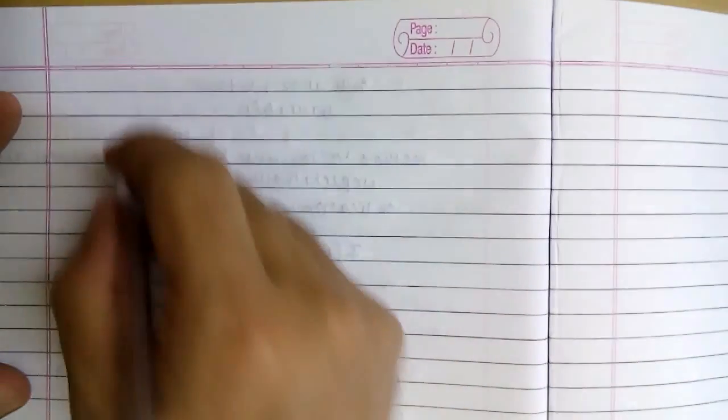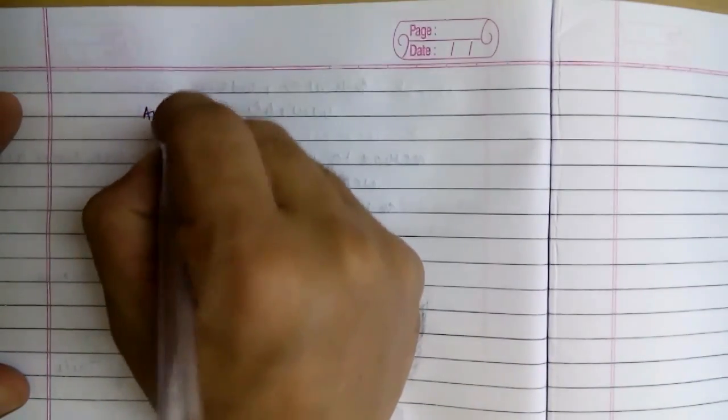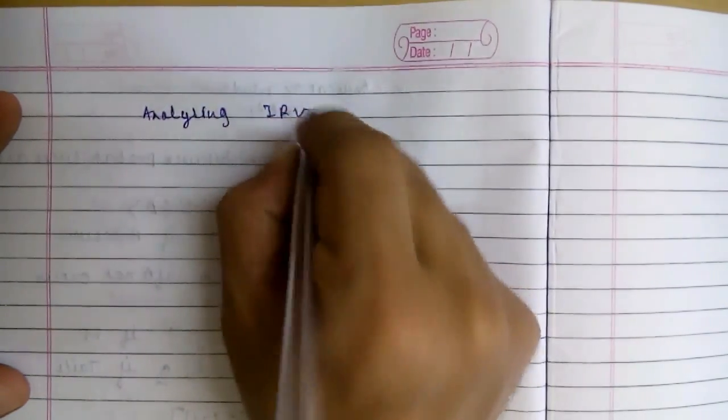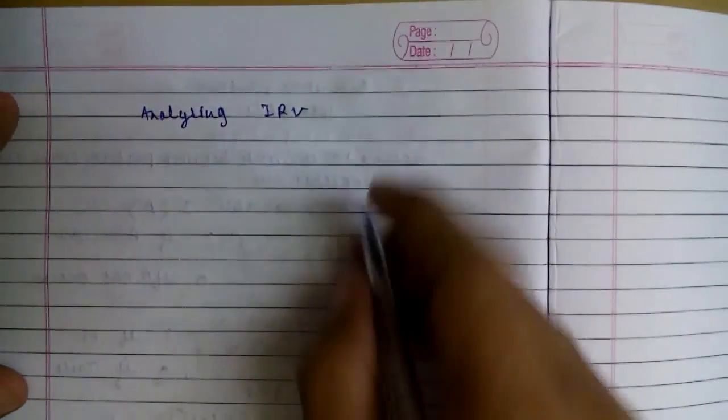Now finally we will be analyzing our hiring problem with the use of indicator random variables we studied in the previous topic.